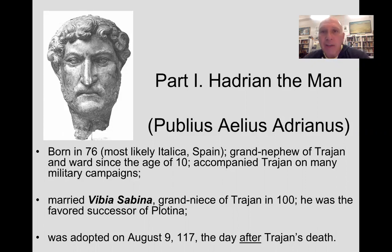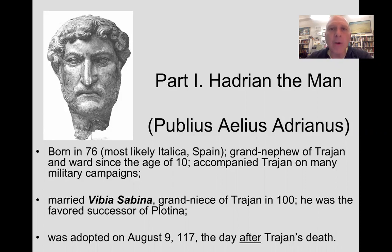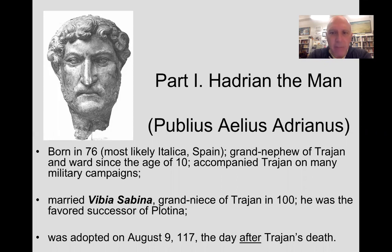He was born in the year 76, most likely in Spain, like his predecessor Trajan. Trajan was the first foreign-born emperor to rule, and his successor Hadrian was also likely to have been born there, presumably in the city of Italica, which is outside of modern-day Seville.